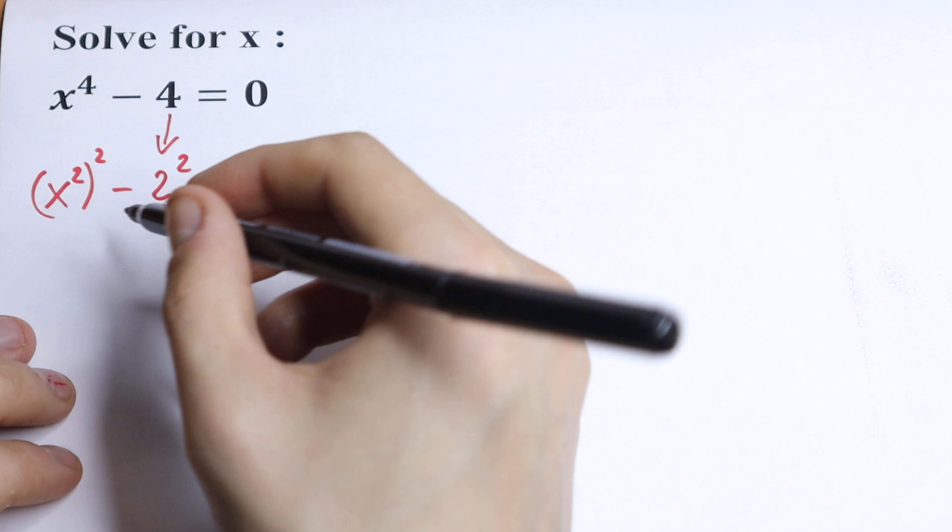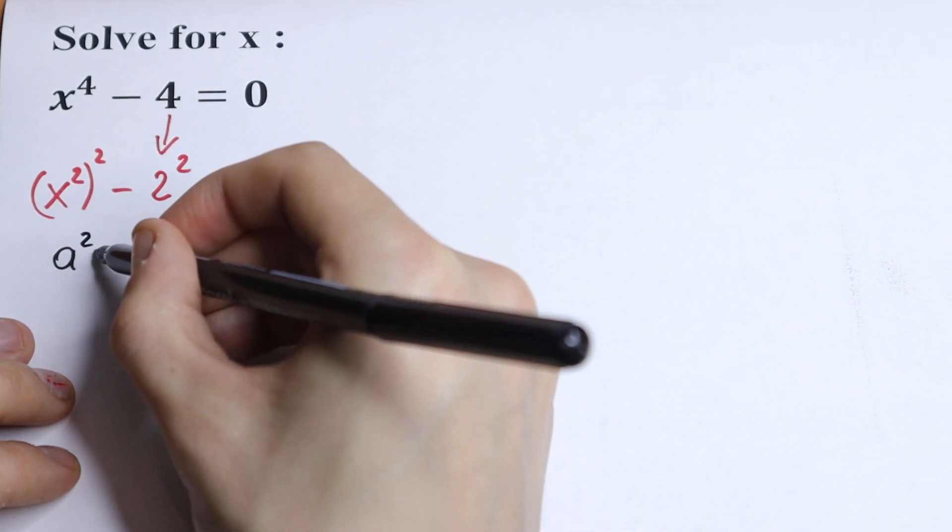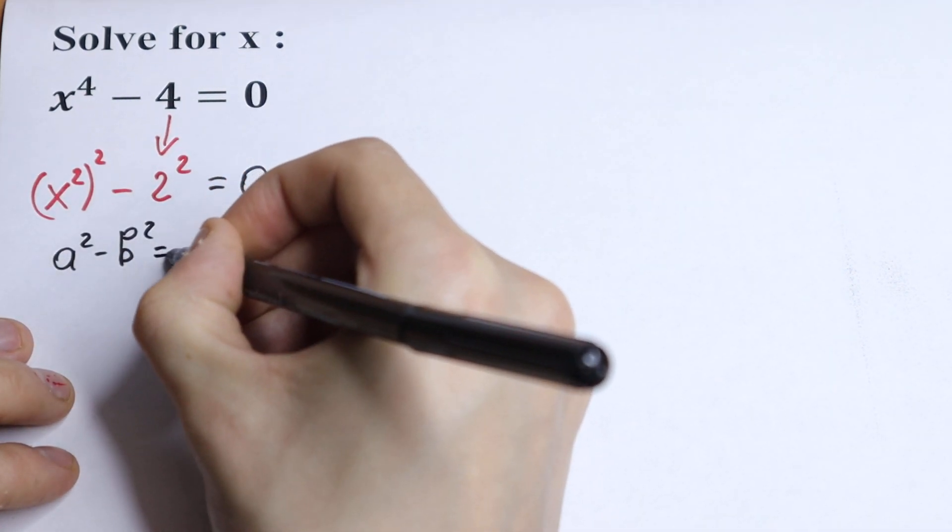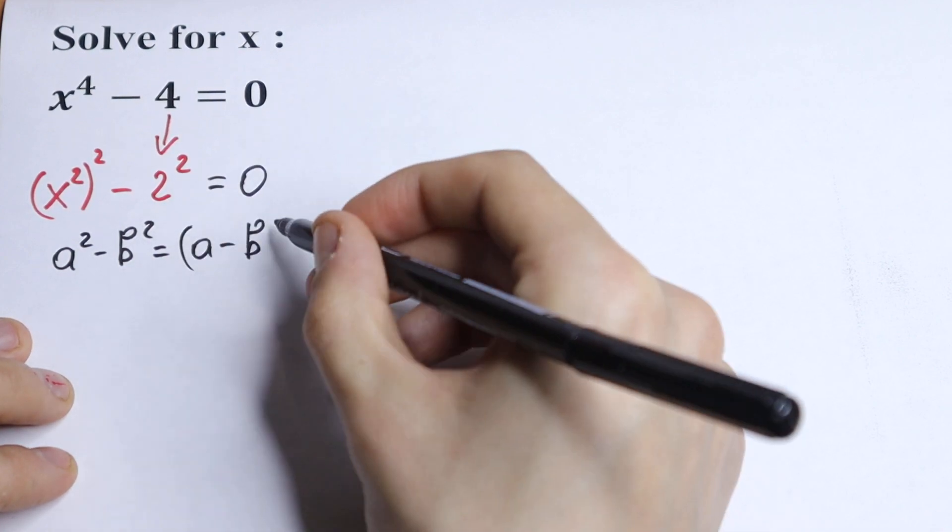So we have our formula. We have a square minus b square. It can be written as a minus b times a plus b.